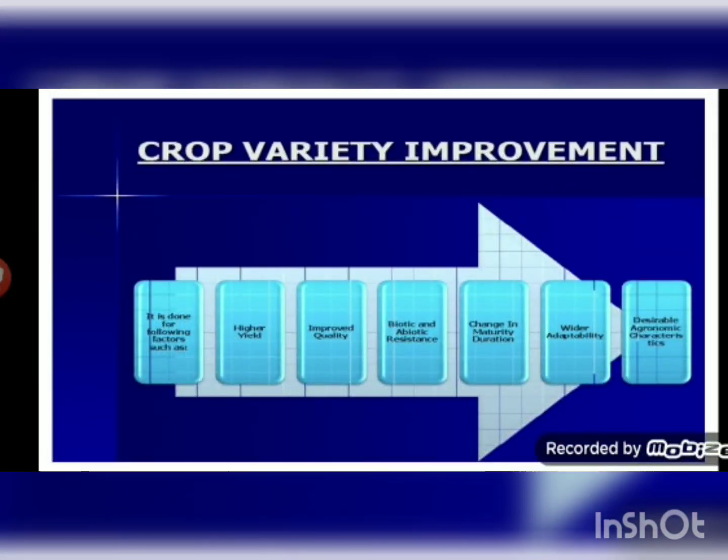Crop variety improvement is done for the following factors: higher yield, improved quality, biotic and abiotic resistance, change in maturity duration, wider adaptability, and desirable agronomic characteristics.